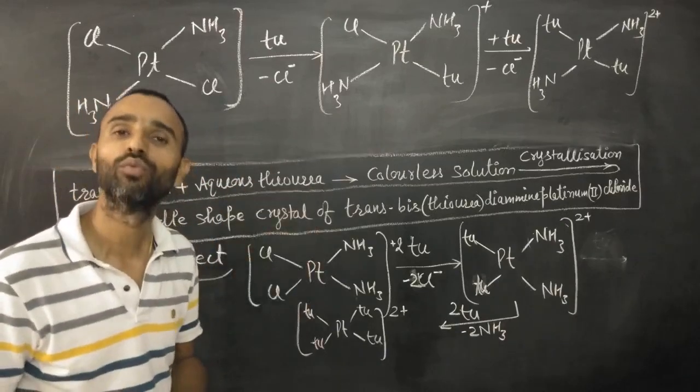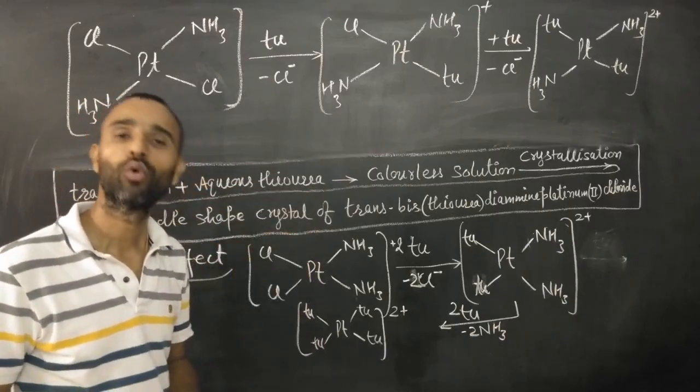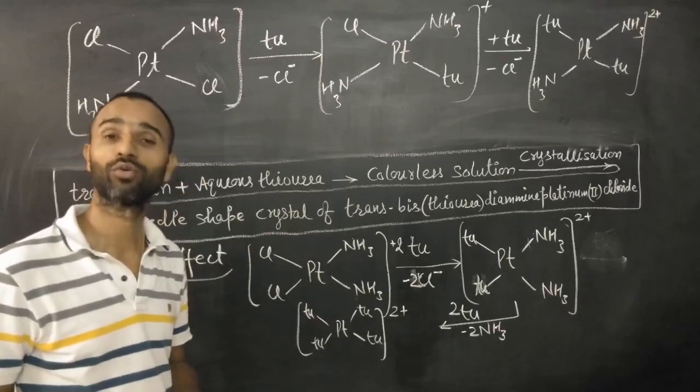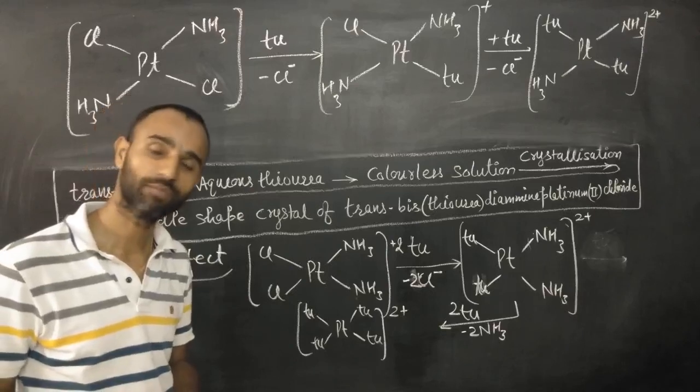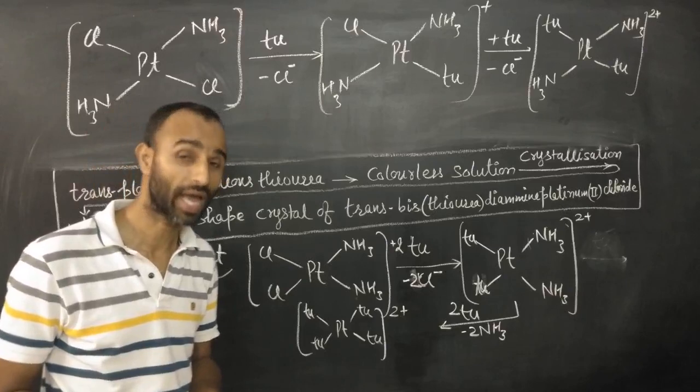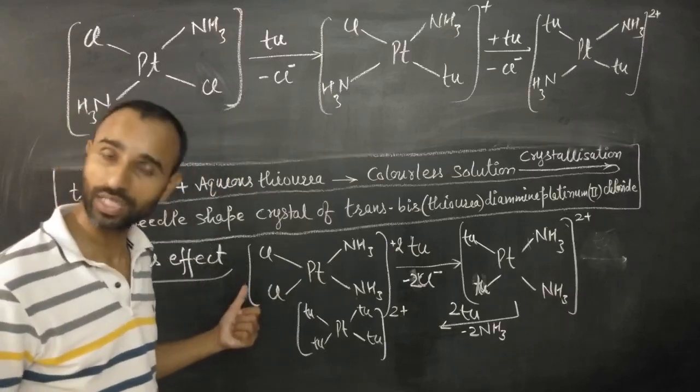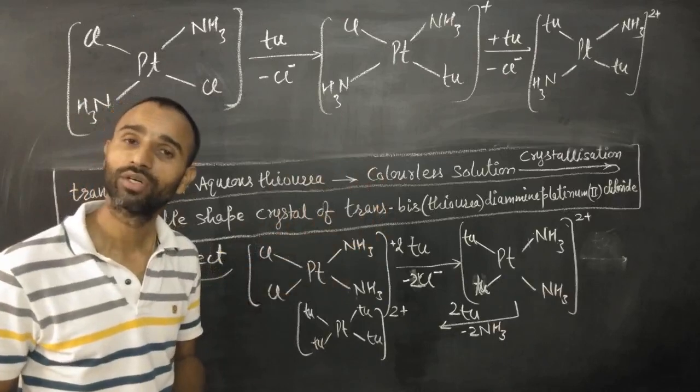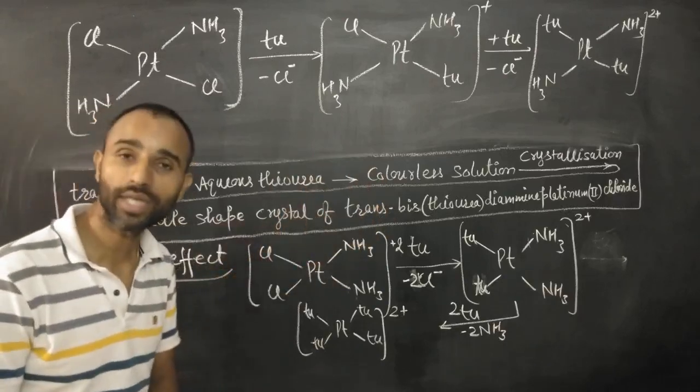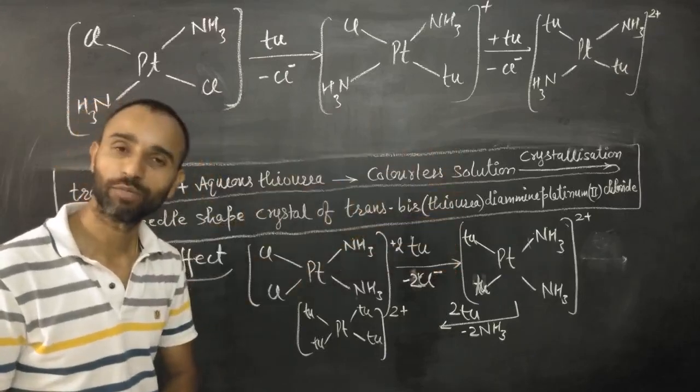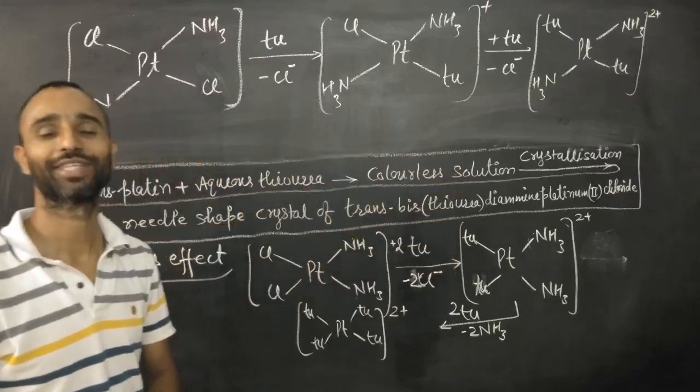And in first case, in cisplatin, we get yellow needle-shaped crystals of tetrakis-thiourea-platinum(II) dichloride. And in case of transplatin, we get white crystals of trans-bis-thiourea-diamine-platinum(II) dichloride. That's it.